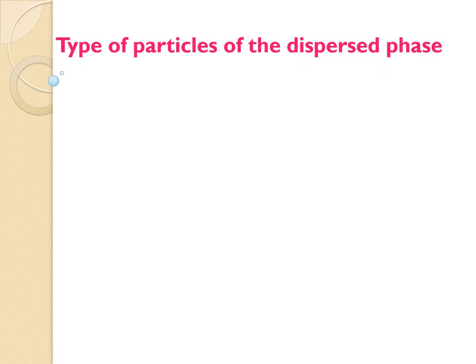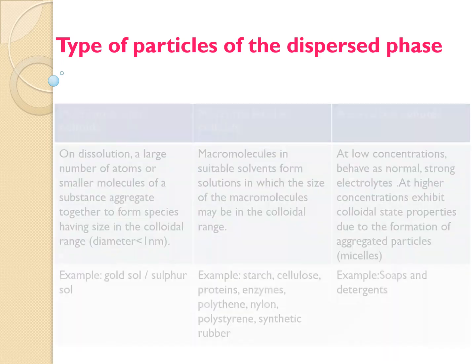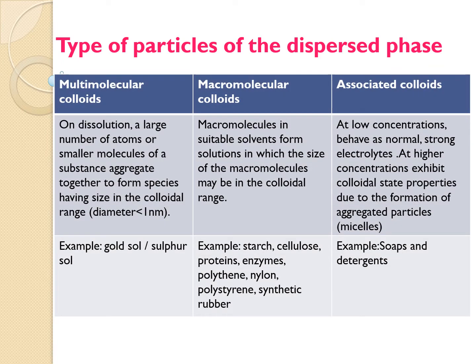The third way of classifying colloids is on the basis of types of particles of the dispersed phase. Broadly, they are classified into three categories: multimolecular colloids, macromolecular colloids, and associated colloids. In multimolecular colloids, on dissolution, a large number of atoms or smaller molecules aggregate together to form species having size in the colloidal range — that is, diameter less than 1 nanometer. Examples: gold sol and sulphur sol.